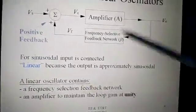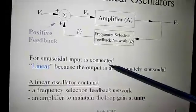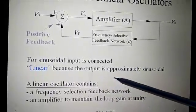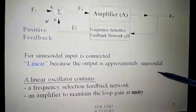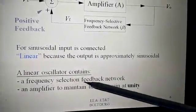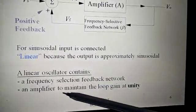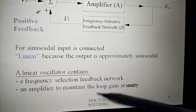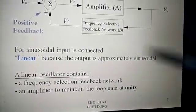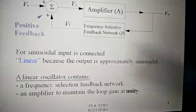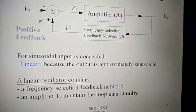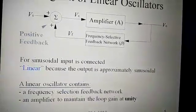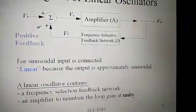For sinusoidal input, the circuit is linear because the output is approximately sinusoidal. A linear oscillator contains a frequency selection feedback network and an amplifier to maintain the loop gain at unity. The loop gain A·beta is maintained at unity — this is the condition of the oscillator.